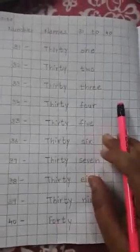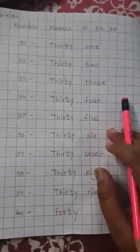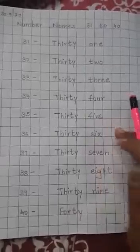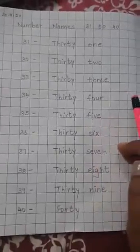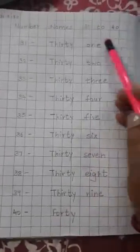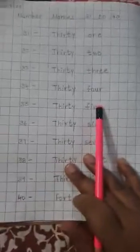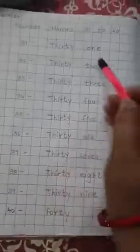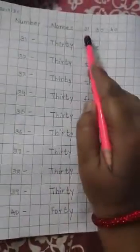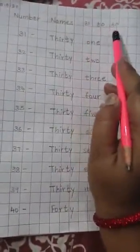Hello students. In your last maths class you have learnt numbers from 21 to 30. Today we will learn numbers from 31 to 40.